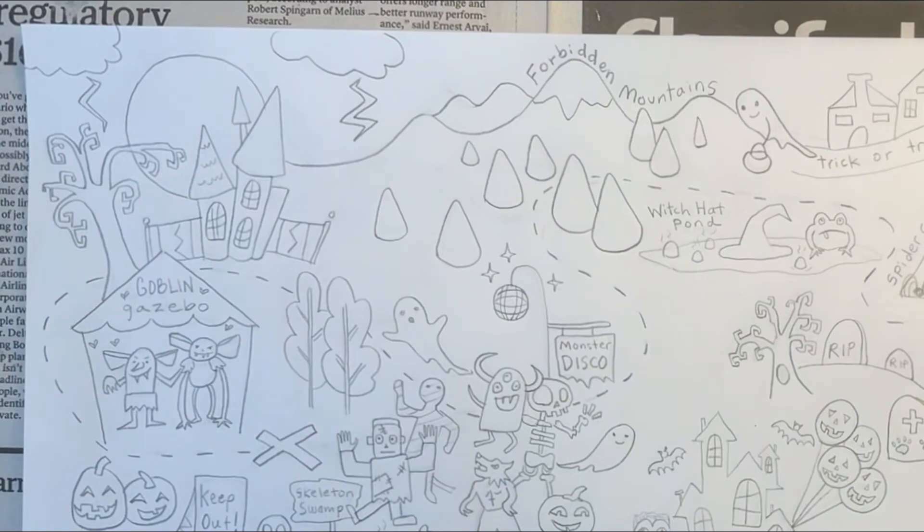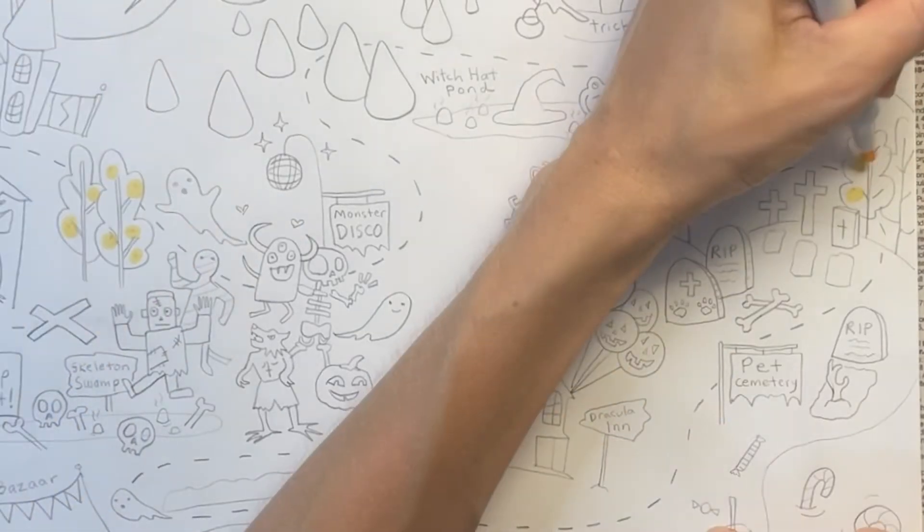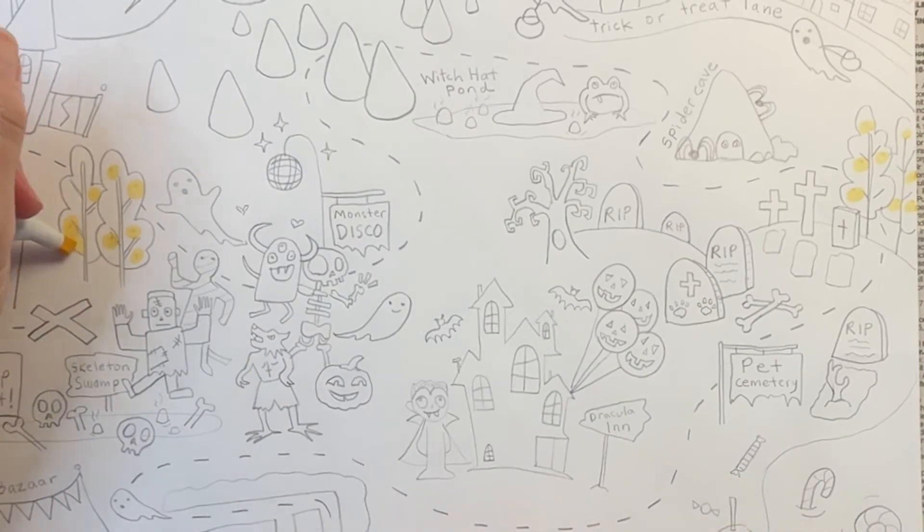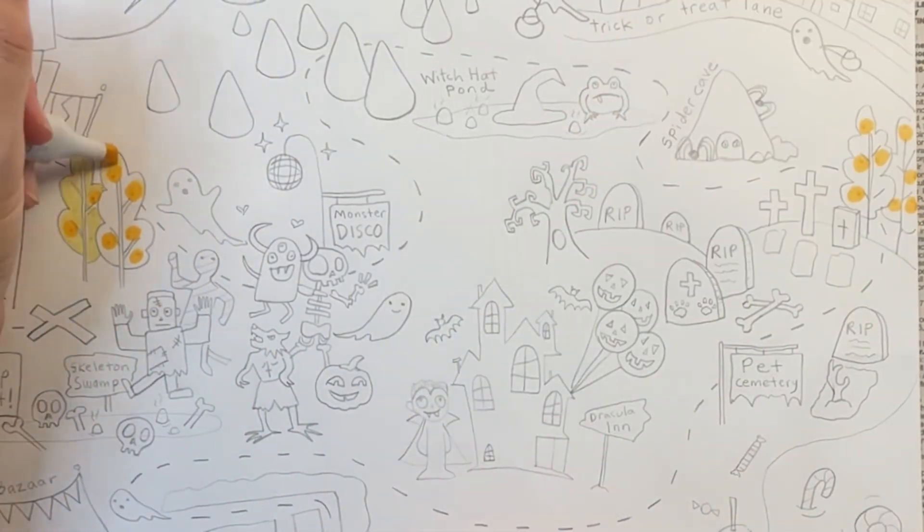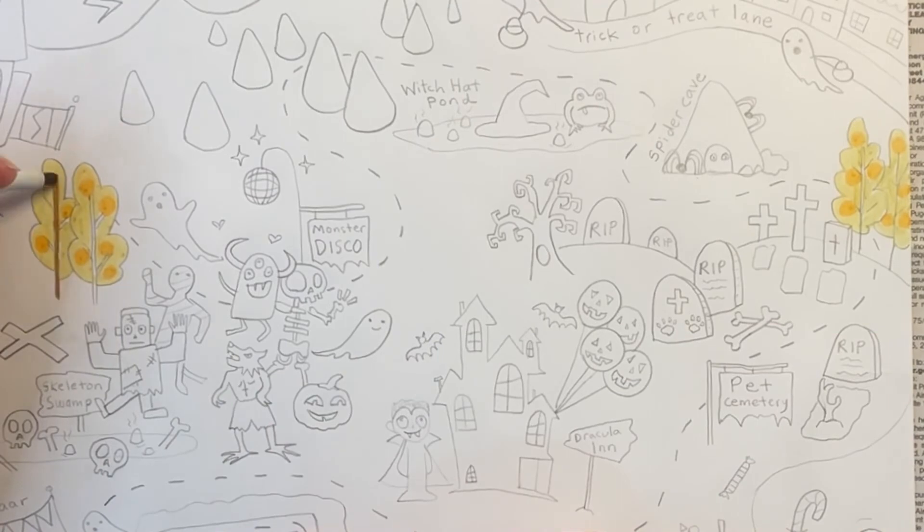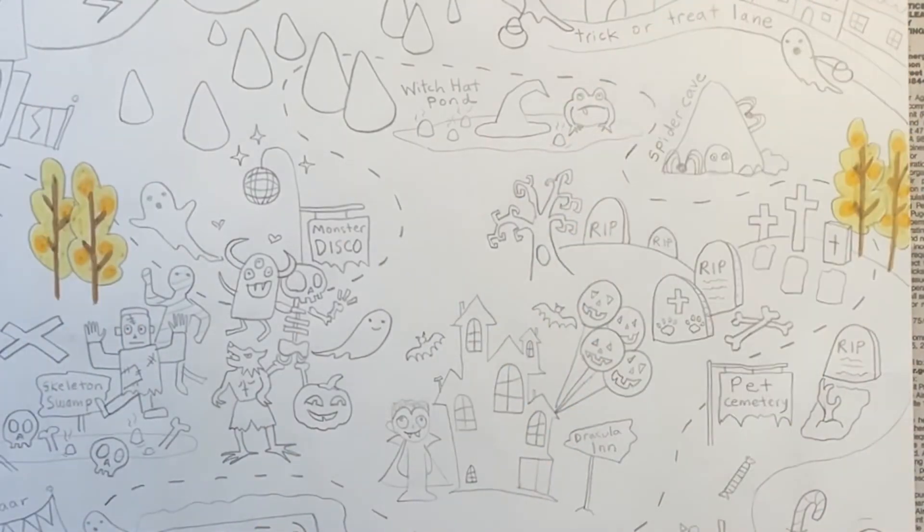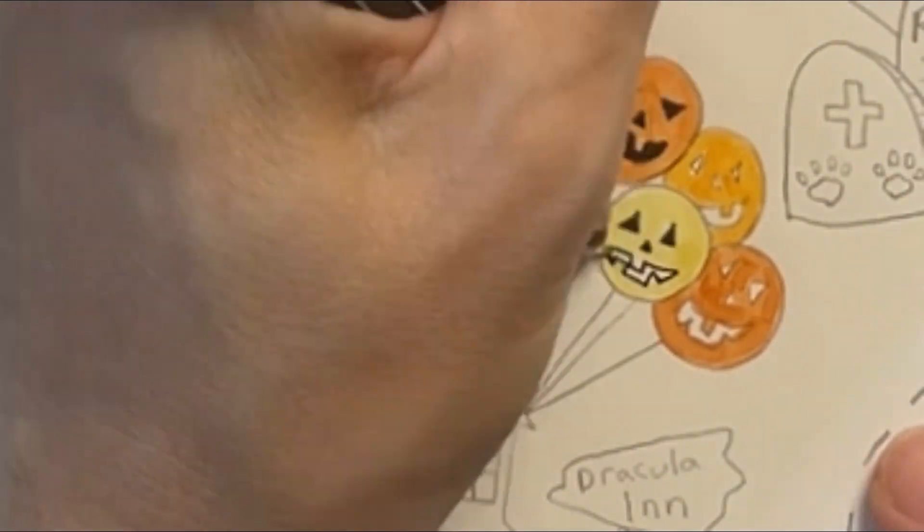Now that I'm done drawing my map, I'm ready to add color. You can use markers, crayons, or colored pencils to color in your map. I'm using mostly markers. I'm coloring the leaves on my trees yellow and orange to show that it's autumn. I'm using different shades of orange and yellow to color in my jack-o'-lantern pumpkin balloons.